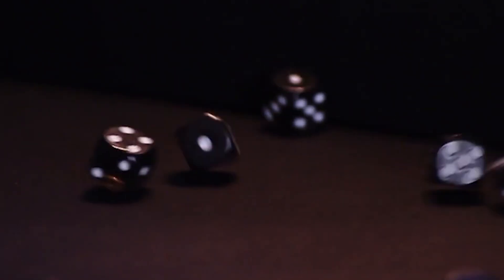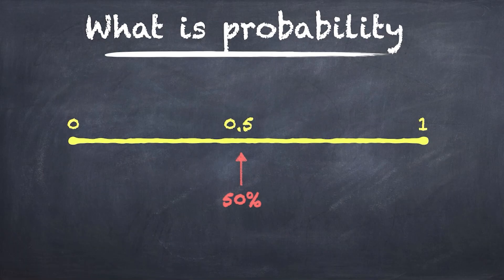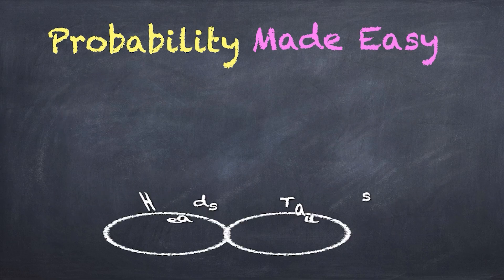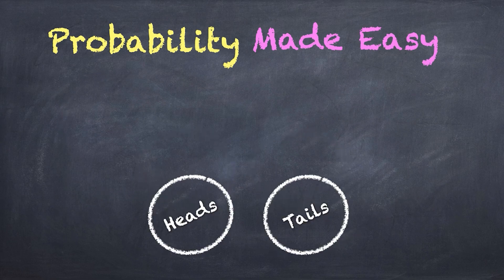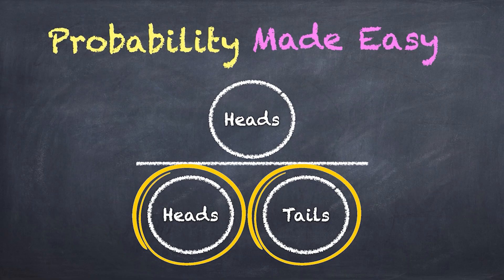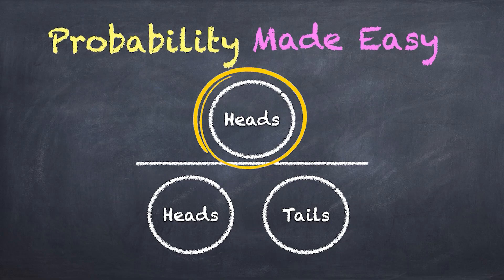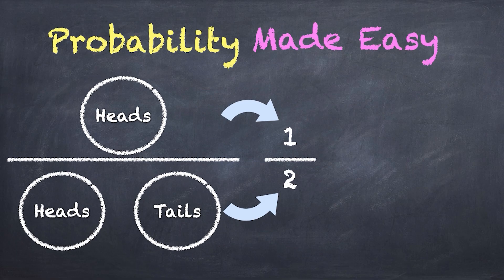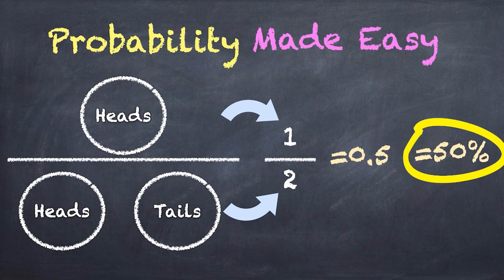Let me quickly prove to you that you already have a great intuition about probability, and then we're gonna jump into the really interesting stuff. If I were to flip a coin and I asked you what are the chances of getting heads, you of course would say it's 50%, because of the two equally likely possible events, there's only one that meets the criteria of interest, in this case being heads. In your head, you've intuitively created a fraction and done a calculation. And of course, the answer is 0.5 or 50%.